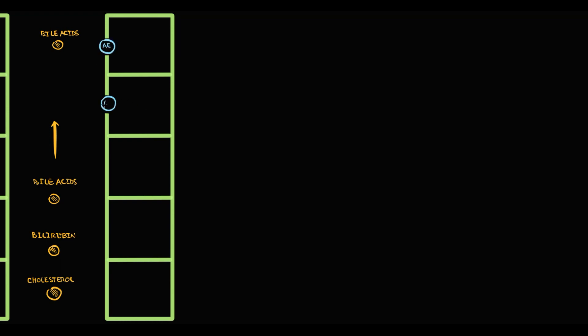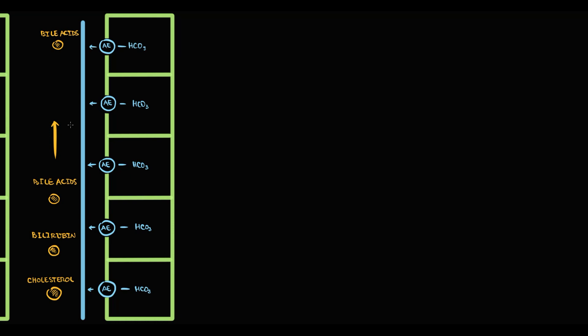To protect themselves, biliary cells have a specific transporter called anion exchanger 2. Anion exchanger 2 provides secretion of bicarbonate, and by secreting bicarbonate, biliary cells create a protective bicarbonate layer that neutralizes bile acids. This bicarbonate layer protects biliary cells from bile acids.